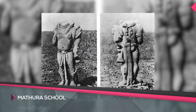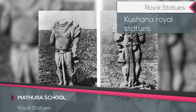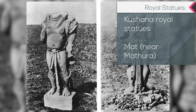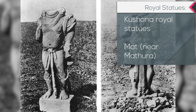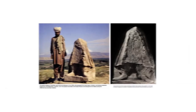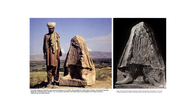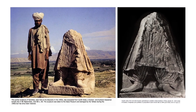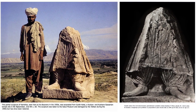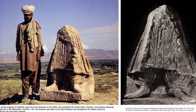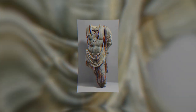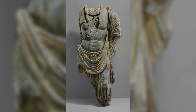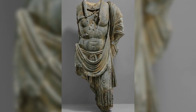Most of the Kushana royal statues were found at the village of Mat near Mathura, where the Kushana kings had a winter palace with a chapel in which the memory of former monarchs and princes was revered. Almost all the figures have been broken by rulers of the succeeding dynasties. The statue of the great Kanishka, the most striking of the statues, unfortunately lacks its head.